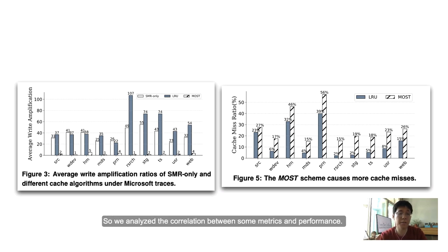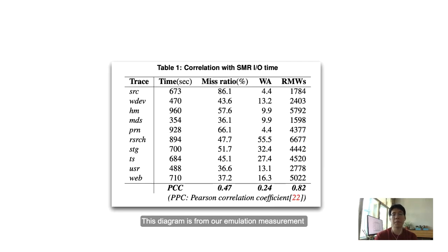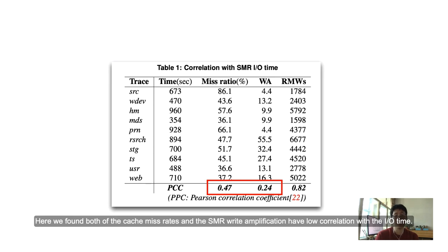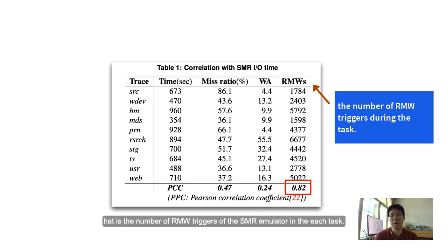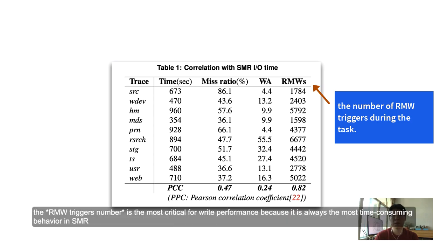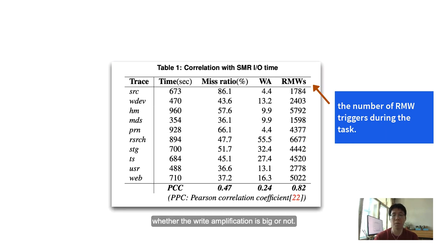We analyzed the correlation between some metrics and performance. This diagram is from our emulation measurement. We ran 10 workloads with MOST cache algorithm. We give correlation coefficient with I/O time. Here we found both cache miss rate and SMR write amplification have low correlation with I/O time. That is to say, the approach to the best write performance is neither optimizing write amplification nor cache popularity. We also found that the index in the last column is strongly related to I/O time: the number of RMW triggers of the SMR emulator in each task. It is reasonable to assume that the RMW trigger number is the most critical for write performance because it will always be the most time-consuming behavior in SMR whether the write amplification is big or not. Therefore, slowing down the RMW trigger can reduce the total I/O time. Now we have found a new optimization direction.